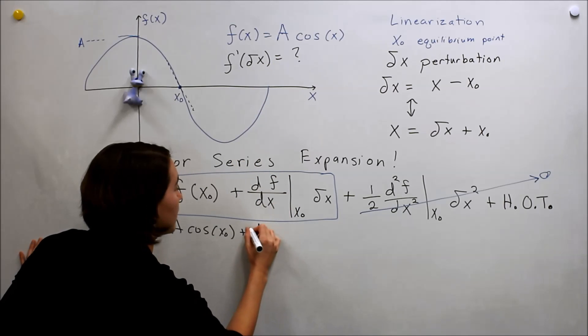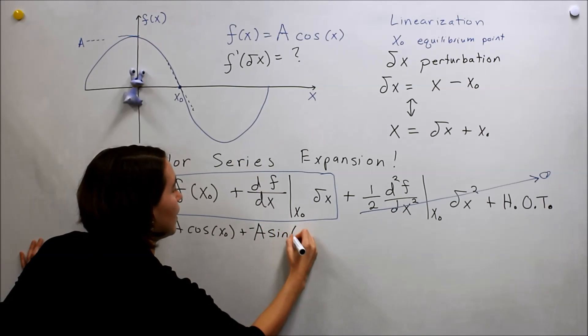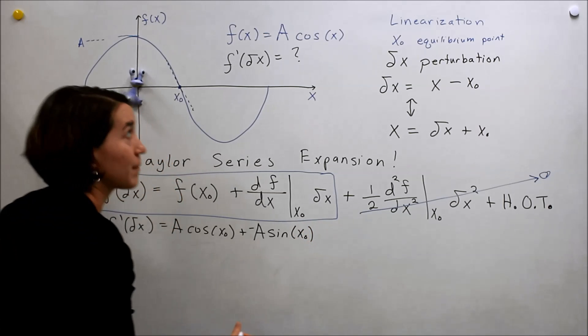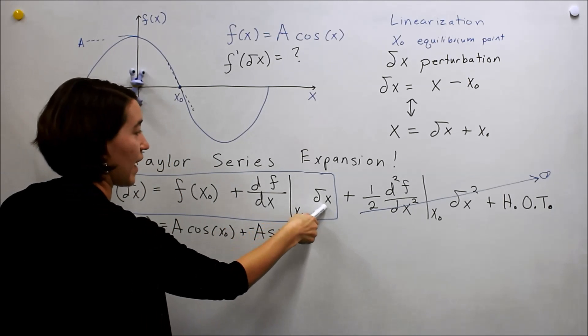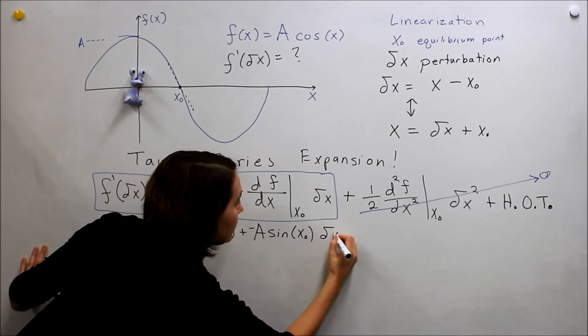and we're evaluating at x₀. Then we multiply that by δx. Okay?